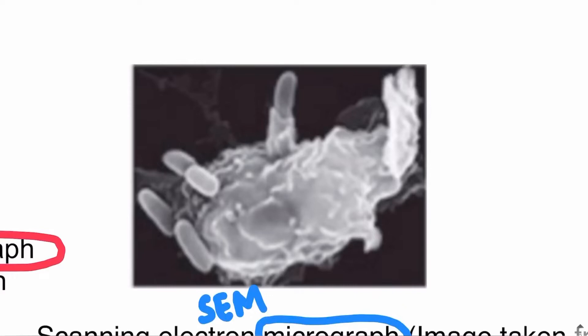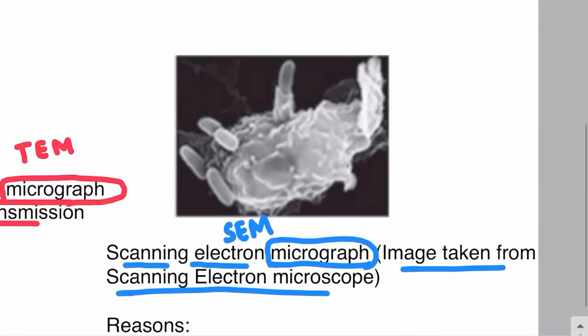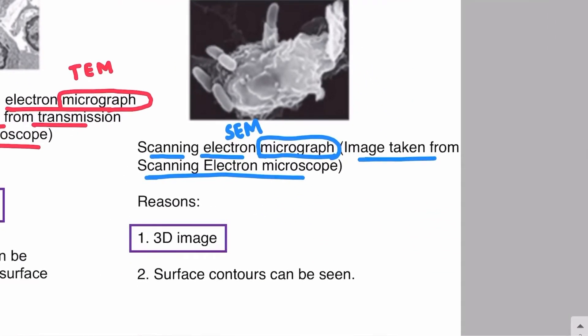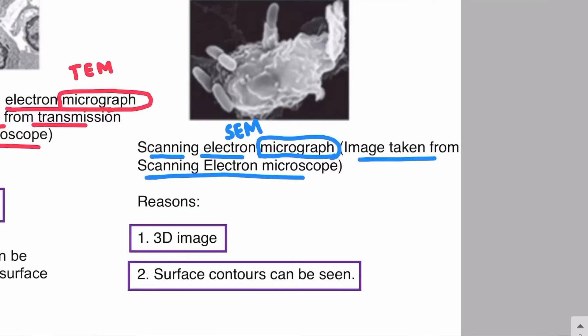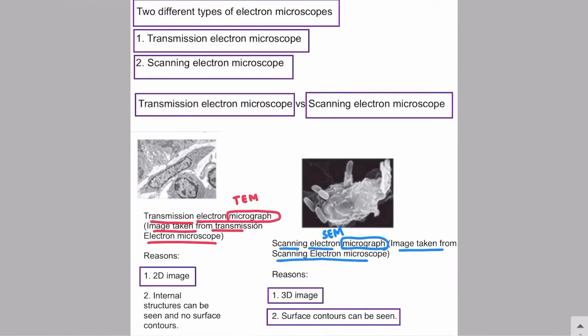Whatever structure is shown, we can understand it is 3D — that is number one. Number two, we are looking at the surface details, the surface contours — not internal structures. So we must remember that if you can see the surface contours or surface details, it means that the image is taken from the scanning electron microscope. This is very high yield for AS level biology examinations.